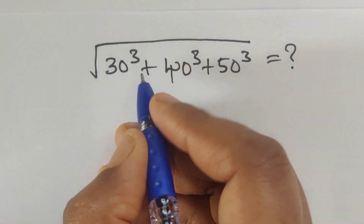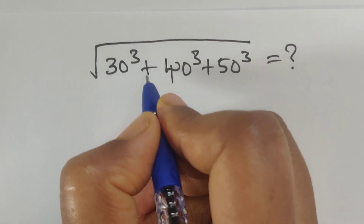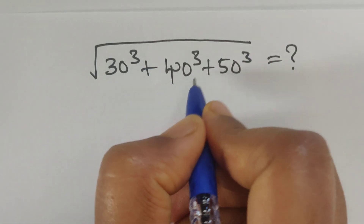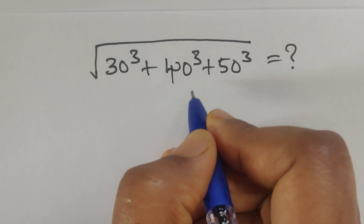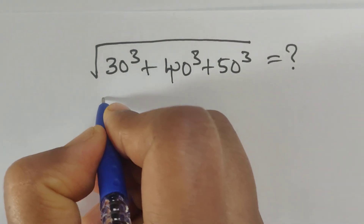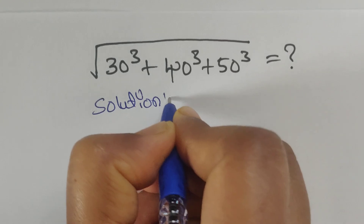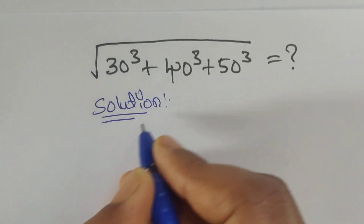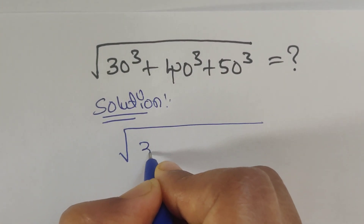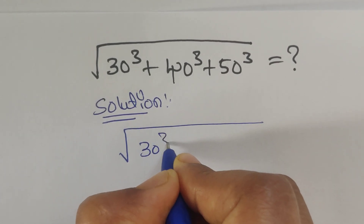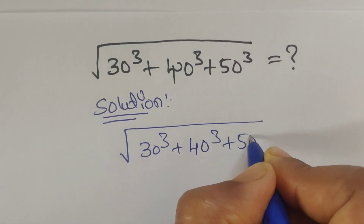Hello everyone, welcome back to our channel. Here we have one problem: the square root of 30 cubed plus 40 cubed plus 50 cubed. Let's see the solution.